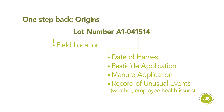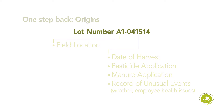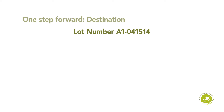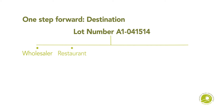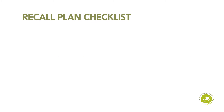You may be able to identify how and when a contamination event could have occurred. Tracking by lot number allows you to determine where any potentially contaminated product was sent — directly to a wholesaler, to a restaurant, through a CSA, or to a consumer at a farmer's market or roadside stand.